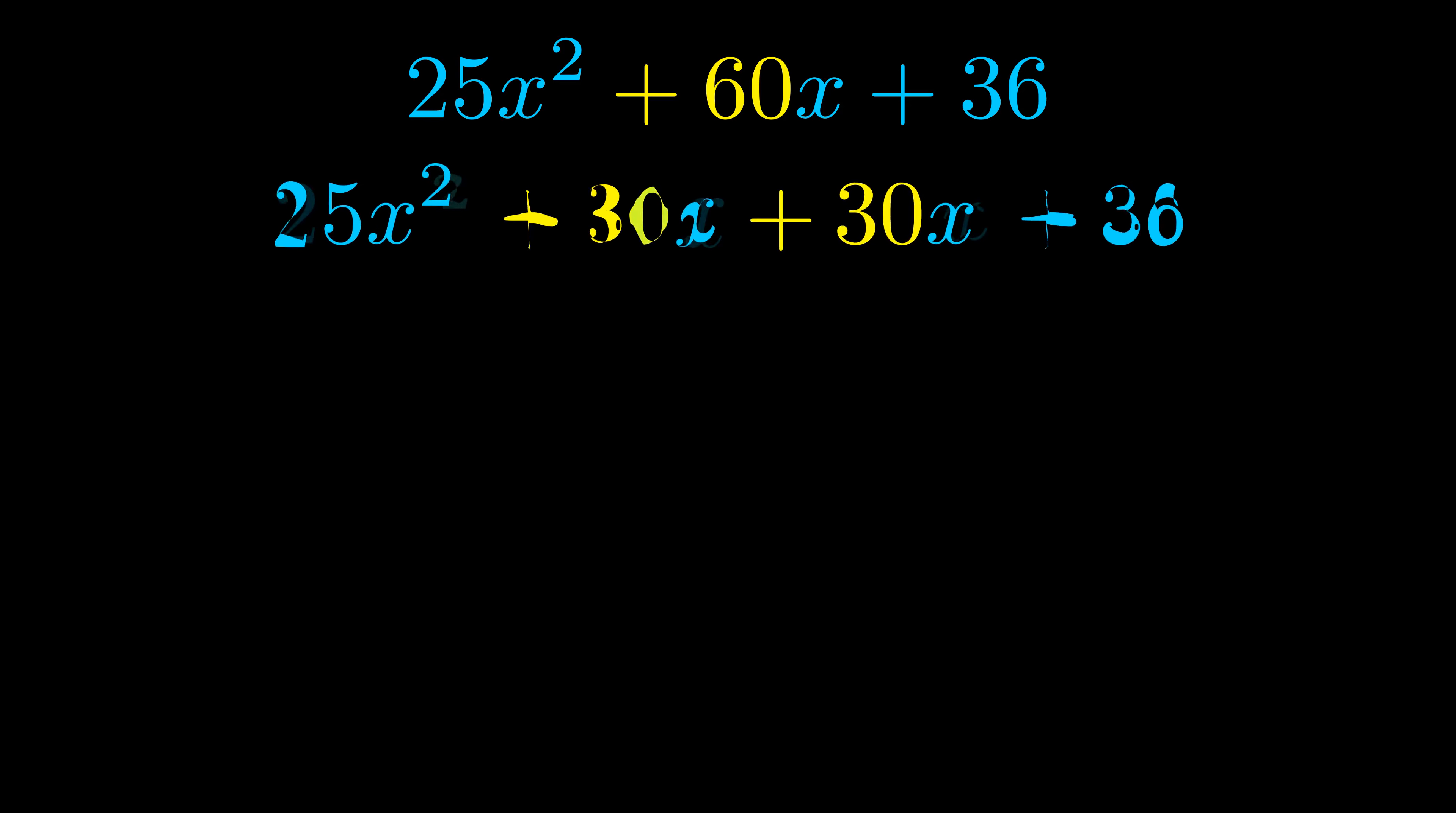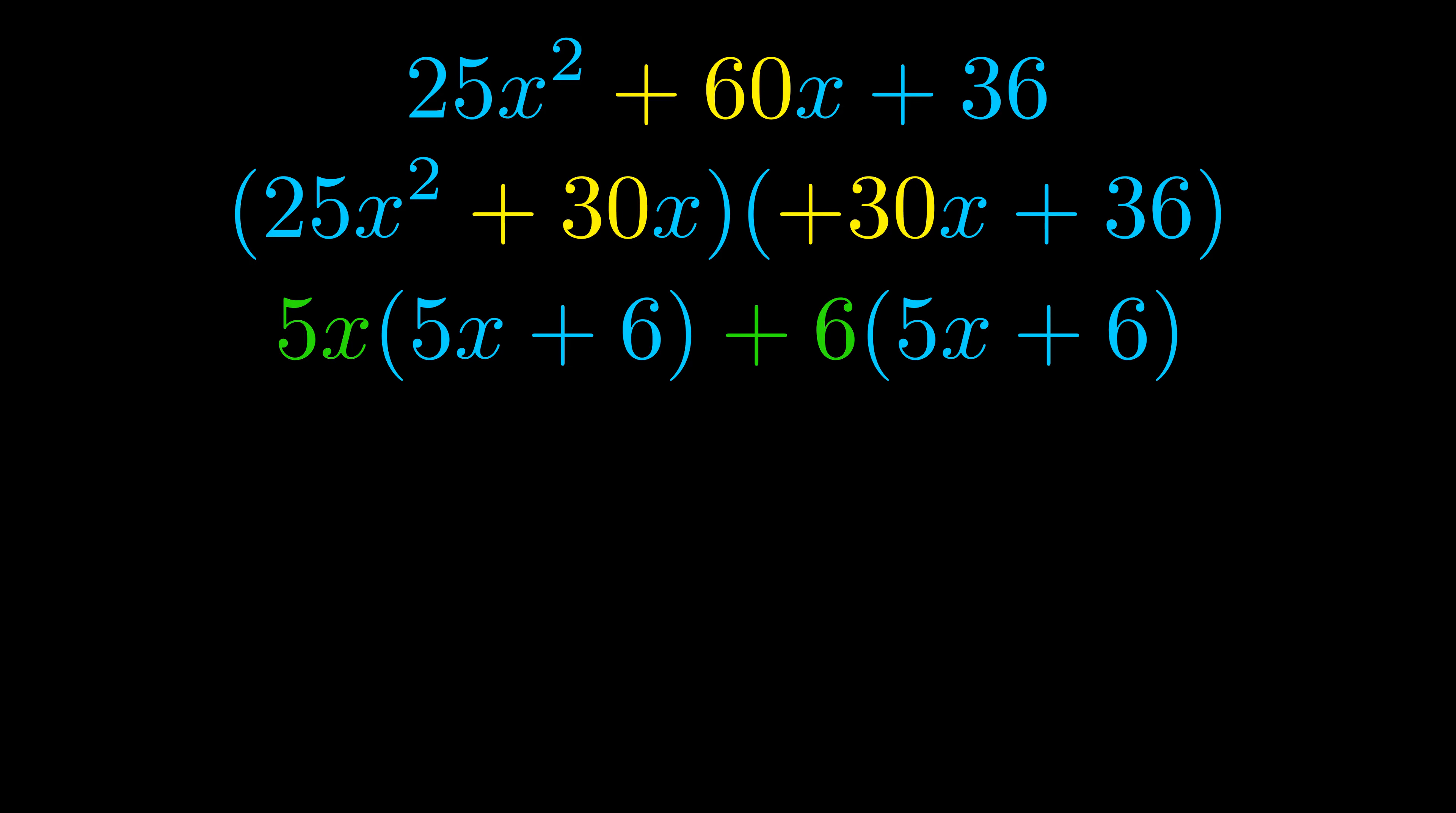Once we've done this we go ahead and we put parentheses around the first term and the last term and we do that so that we can take the greatest common factor out of both terms. We can see the greatest common factor is now outside in green. Notice also how what remains inside of the parentheses is the same in both cases. The blue values are the same.